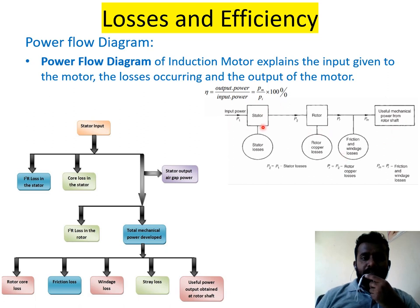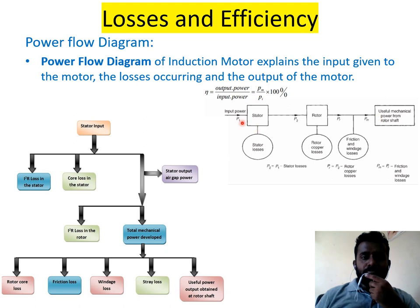This is the power flow diagram. You can see there is the stator block, the rotor block, and useful mechanical power from the rotor shaft coupled to the load. There is some input power PI given. The power output of the stator P2 is equal to P1 power input minus the stator losses, that is P1 minus stator losses.